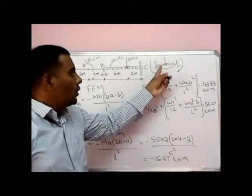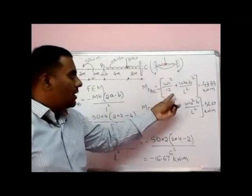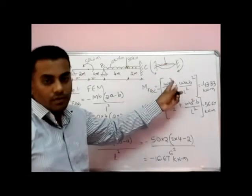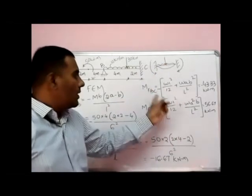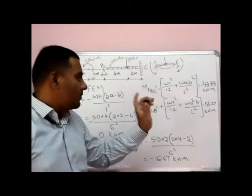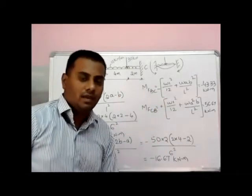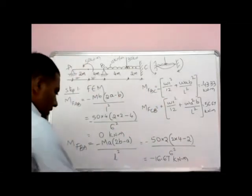There are two different types of loadings on the B-C span, so by the principle of superposition you apply both effects and add them to get MFBC and MFCB. Step one is now complete.